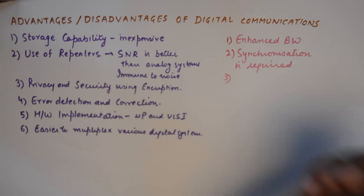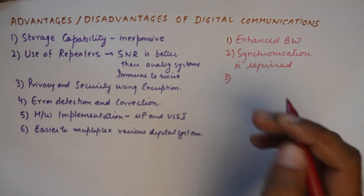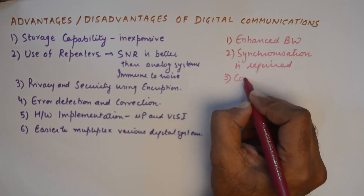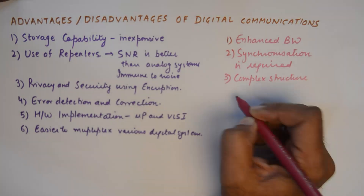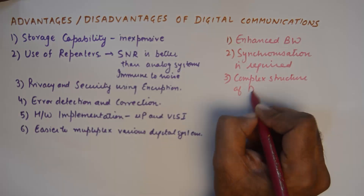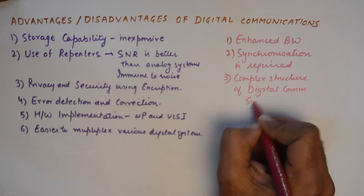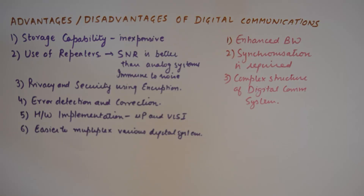The third disadvantage of a digital communication system is higher power consumption per block. The complex structure of digital systems results in higher power consumption due to the many stages of conversions which are required at every level.